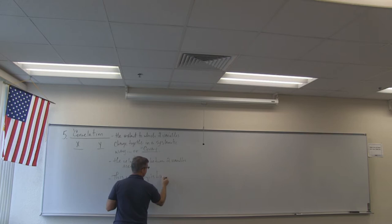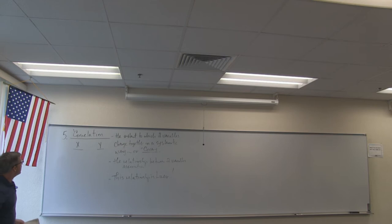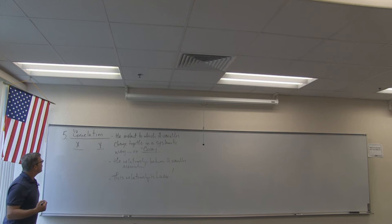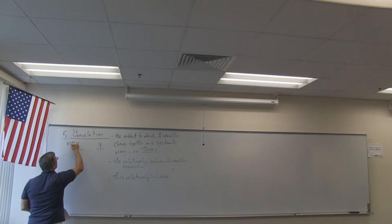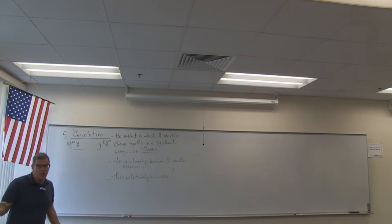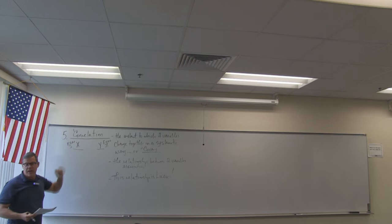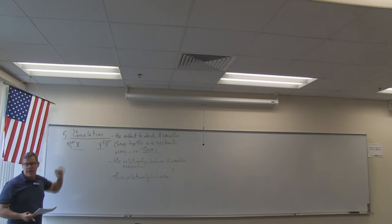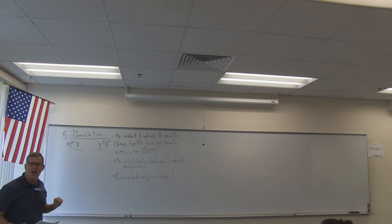It's a linear relationship. Let's call X exam one scores and Y exam two scores. I've been teaching this subject matter a long time, and I can tell you based on the data I've gathered that there's a pretty high correlation between exam one and exam two scores. Students score pretty similarly on exam two as they do on exam one — sometimes a little different, but most of the time there's a lot of similarity.